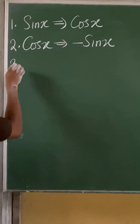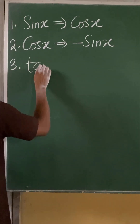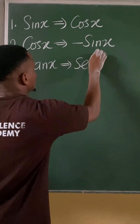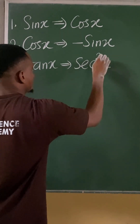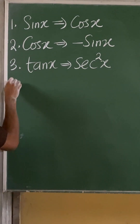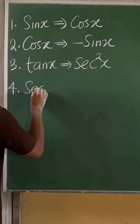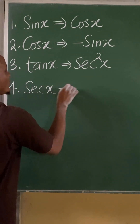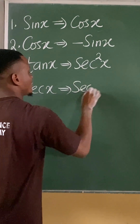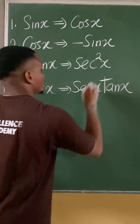Number three, note that if I differentiate tan x, I will have sec squared x. Number four, note that if I differentiate sec x, I will have sec x tan x.